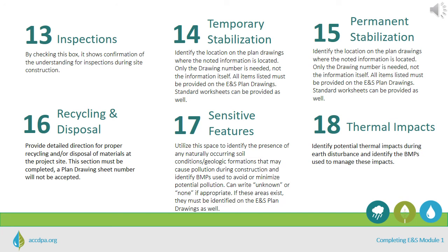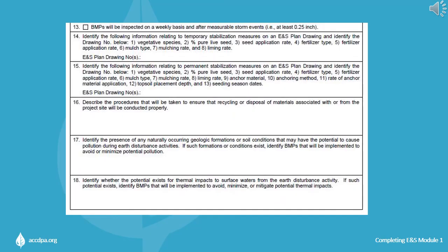Items 14 and 15 are where stabilization is addressed. In the space provided, identify the location on the plan drawings for both temporary and permanent stabilization where the noted information is located — only the drawing sheet number is needed, not the information itself. Many items are listed as necessary information that must be shown on the ENS plan drawings, which differs between Items 14 and 15, and can be used as a tool to double-check that all required information has been provided. Standard worksheets can be presented as well for applicable materials.